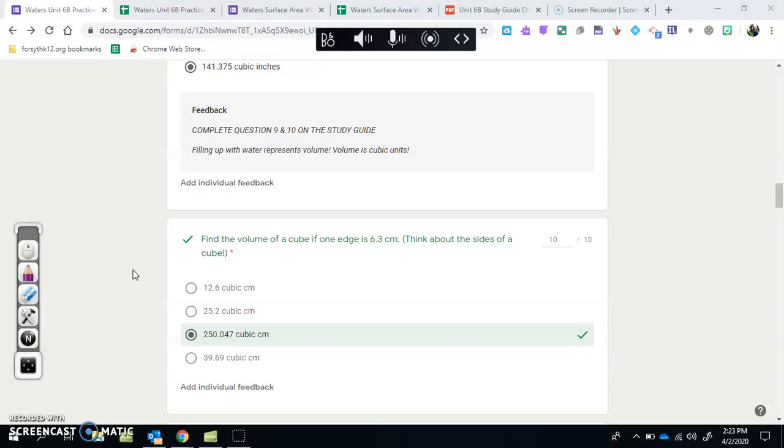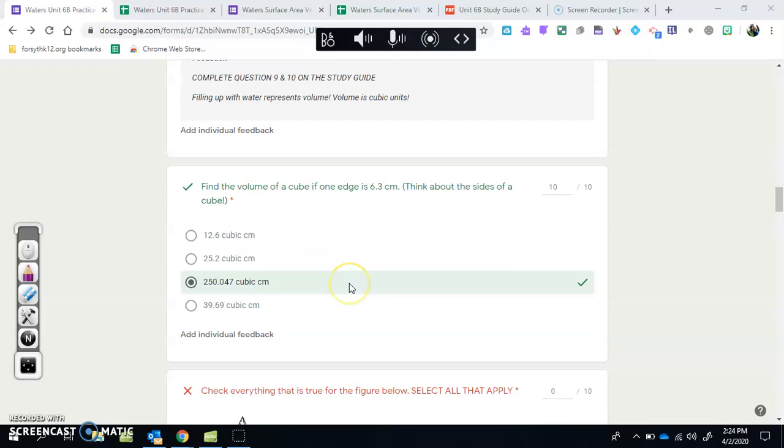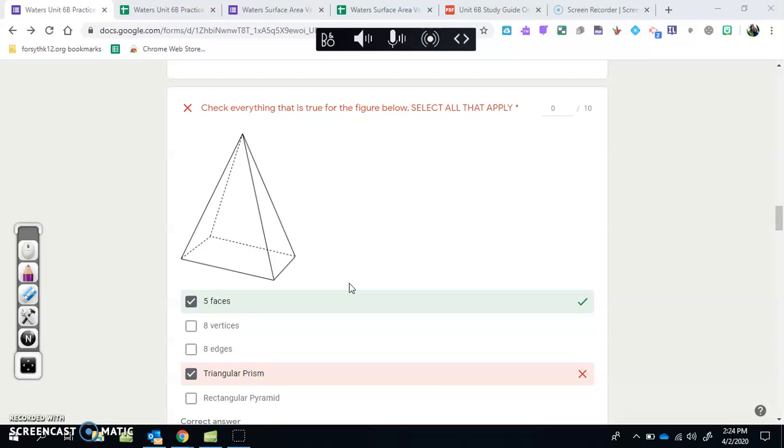Let's look at the next one. Find the volume of a cube if one edge is 6.3 centimeters. This person got this right, but what a lot of people have been doing is forgetting that a cube would have all the same edges. So volume equals length times width times height - it's going to be 6.3 times 6.3 times 6.3. A lot of people have been doing 6.3 times three - you can't do that. You've got to take it one step at a time. Do 6.3 times 6.3 first and then multiply it again. You should get 250.047 cubic centimeters.